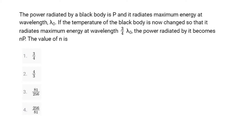First question: the power radiated by a blackbody is P and it radiates maximum energy at wavelength lambda-naught. There are two cases in this question. In the first case, the power is P and it radiates maximum energy at wavelength lambda-naught, so lambda-max equals lambda-naught.